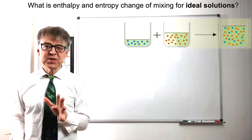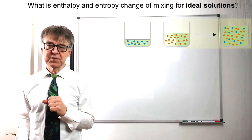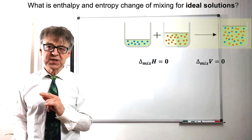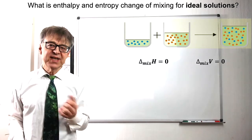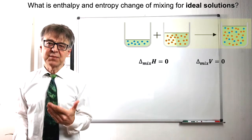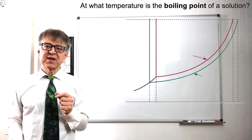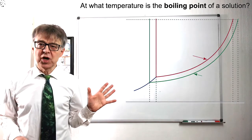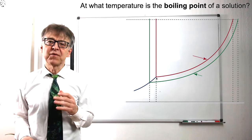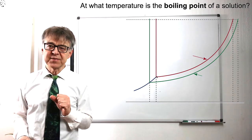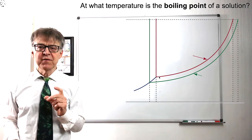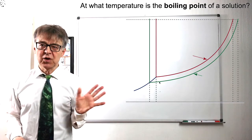The following explanations apply to ideal solutions. That is, solutions in which intracomponent and intercomponent interactions are similar. Chi is zero. In this PT phase diagram, we see the vapor pressure curve, melting pressure curve, and the triple point of a solvent marked in red. The corresponding curves for a solution are drawn in green.